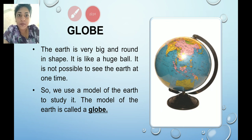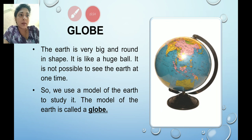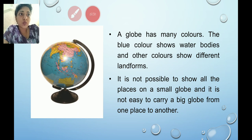The model of the earth is called a globe. The word globe comes from a Latin word 'globus' which means sphere. A globe has many colors — the blue color shows water bodies and other colors show different landforms.